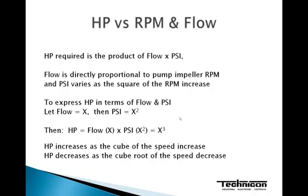So if we look at horsepower versus RPM and flow, we know that horsepower required is the product of flow times the PSI in the system. Flow is directly proportional to the pump impeller RPM, and the pressure or PSI varies as the square of the RPM increase.